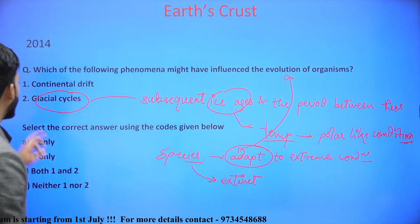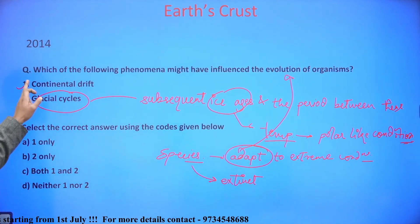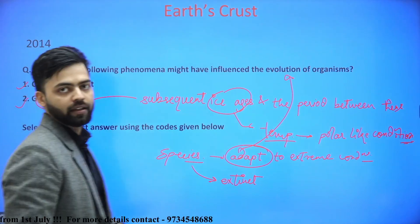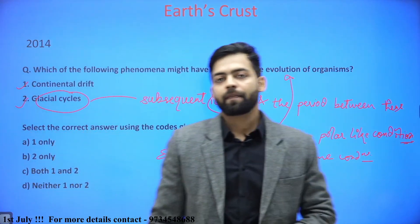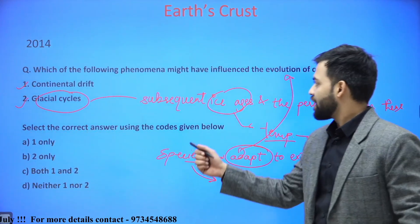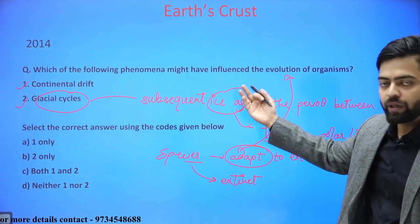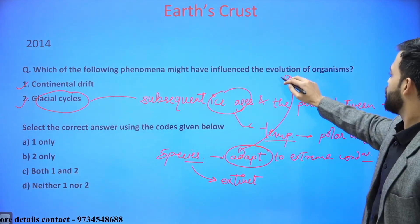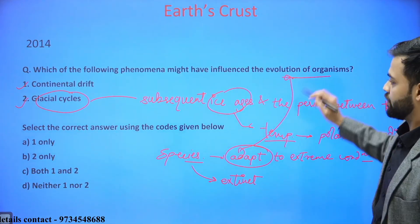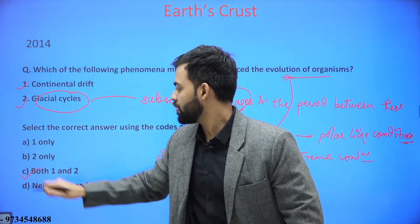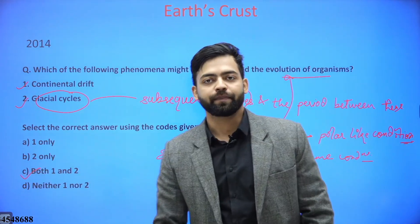So both continental drift as well as glacial cycles influence the evolution of organisms. Hence the correct answer is both 1 and 2.